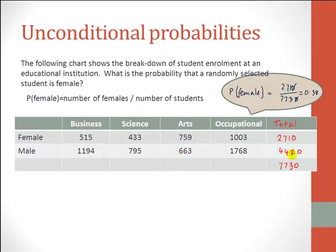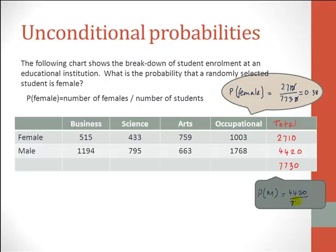Since we have the number of males already worked out, we can also find the probability that a randomly selected student is male. Please use an improvised notation if you don't want to write the entire word, but always write an event — don't just put a number. The probability that a randomly selected student is male is 4420 divided by 7730. Again, reduce this fraction to its simplest form or convert it to decimal notation.